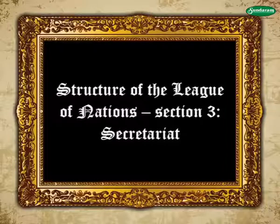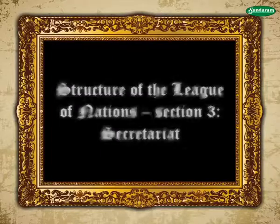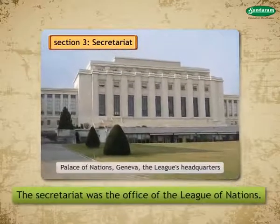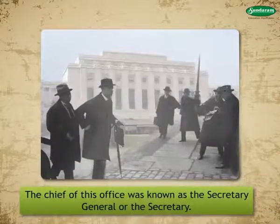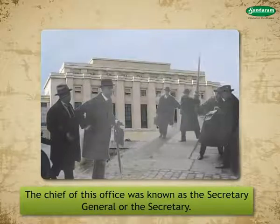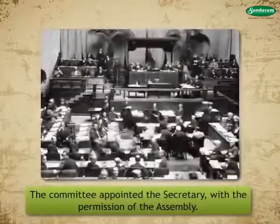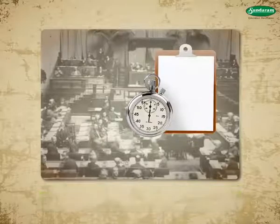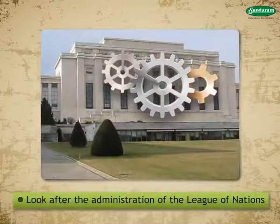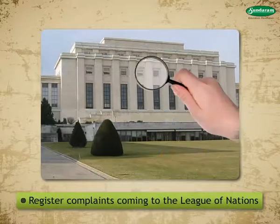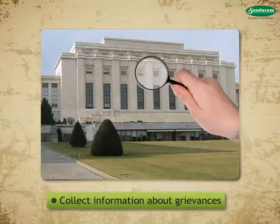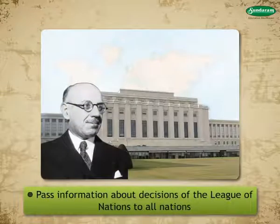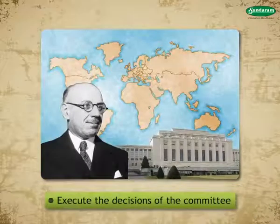The third section was the Secretariat. The Secretariat was the office of the League of Nations. The Chief of this office was known as the Secretary General. The Committee appointed the Secretary with the permission of the Assembly. The principal tasks of the Secretary were to look after the administration of the League of Nations, register complaints coming to the League, collect information about grievances, keep the documents of administrative works, pass information about decisions of the League of Nations to all nations, and execute the decisions of the Committee.